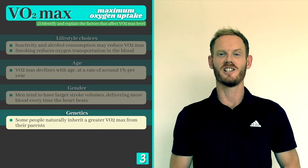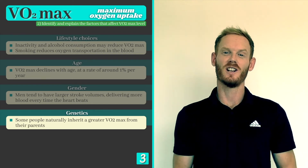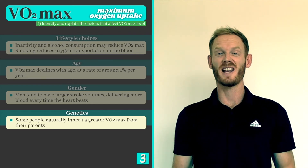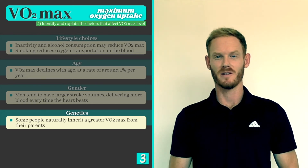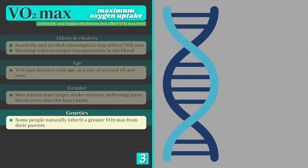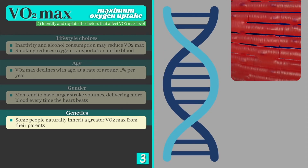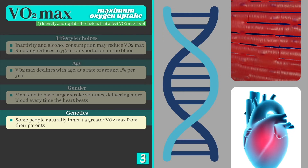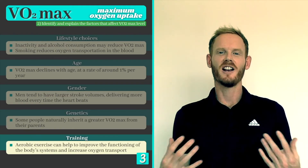Our fourth factor is genetics. Some people naturally inherit a greater VO2 max from their parents. Genetic factors that influence your oxygen uptake include the makeup of your muscle fibres — that is, whether you have a larger proportion of fast or slow twitch fibres — and the size of your heart, which determines the rate at which you can transport oxygen via the blood.